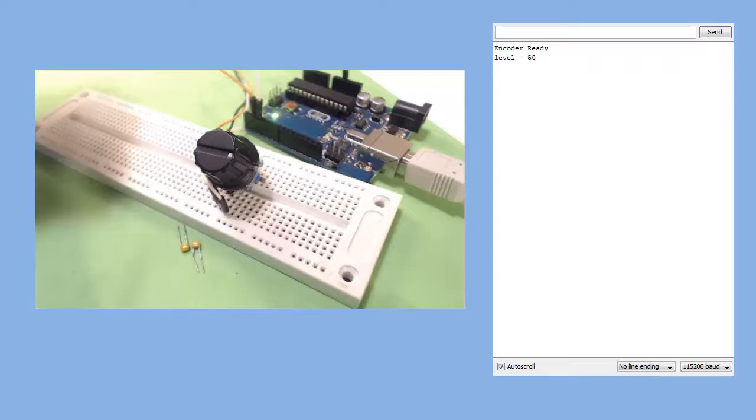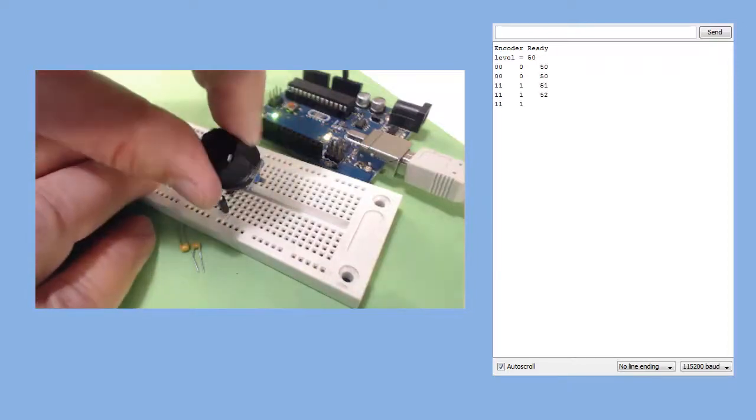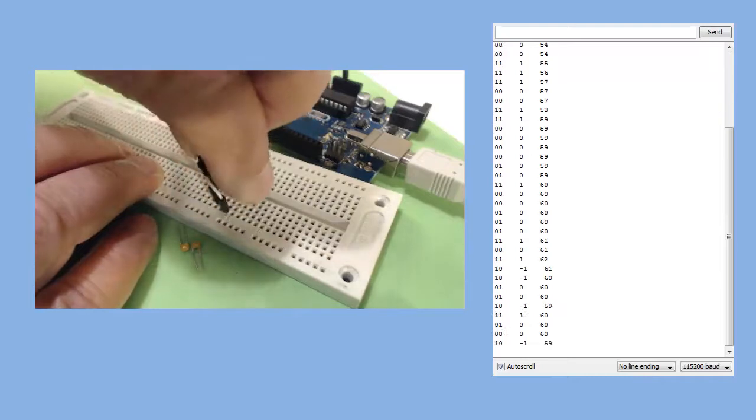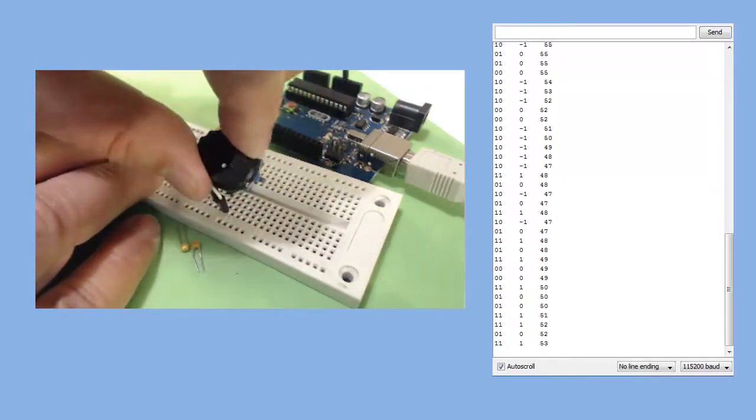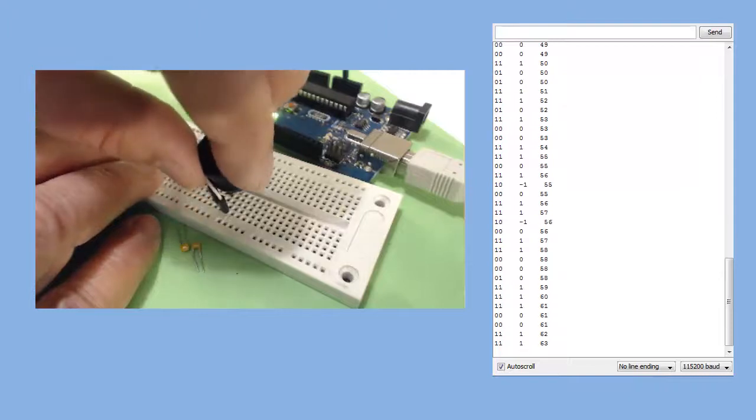Let's see what happens now when we turn the knob. Look at all the zeros. Look at all the errors that occur. The key bounce goes crazy.